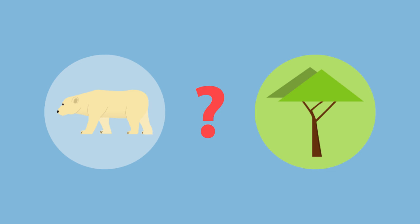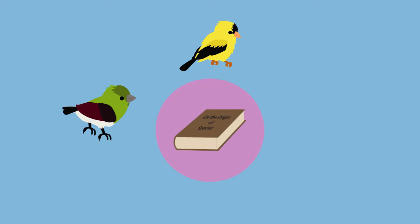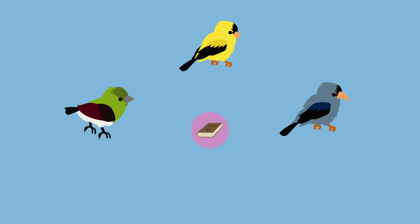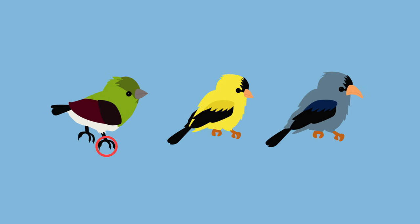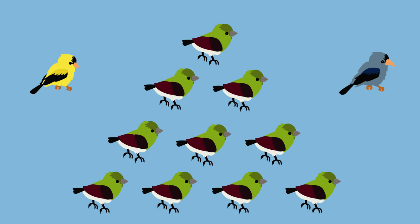Why do certain species of plants and animals sometimes become extinct? According to the theory of evolution, individuals of the same species show a range of variations. Some individuals have characteristics that are better suited to their environment, making them more likely to survive and reproduce, whilst others are less well-adapted. These less well-adapted individuals may eventually fail to reproduce and their genes are removed from the population.